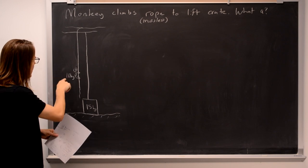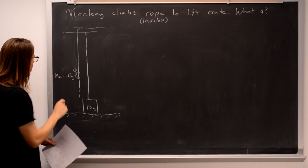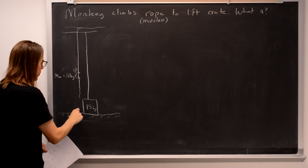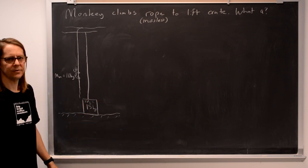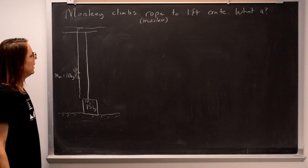So let's see. The monkey, we're going to call this mass of the monkey, just to make the equation simpler. But we know it's 10 kilograms, and this will be the mass of the crate is 15 kilograms. Okay, well, I would start probably with free body diagrams.